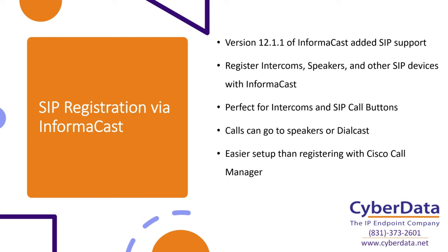The other option is SIP registration via InformiCast — what we commonly refer to as SIP via InformiCast. That was introduced with version 12.1.1 of InformiCast when they added SIP support, which was a really awesome addition. Before that, in version 11, the only option was to register with Cisco Call Manager because they didn't have InformiCast Fusion. You had to call through a trunk, which was cumbersome due to the complex Cisco setup. Having SIP registration through InformiCast really blew out some of the barriers of entry to using many of our products with InformiCast, especially the SIP variants.